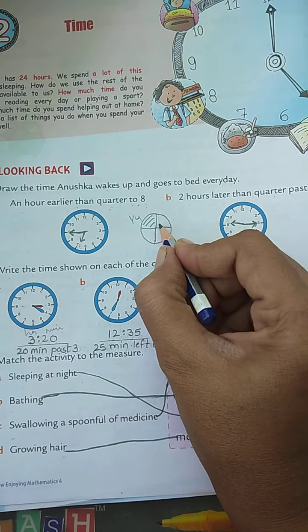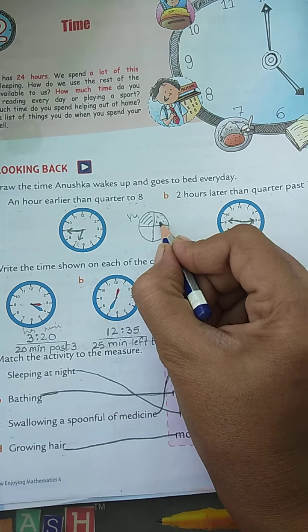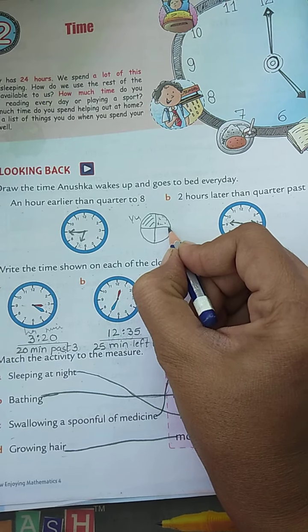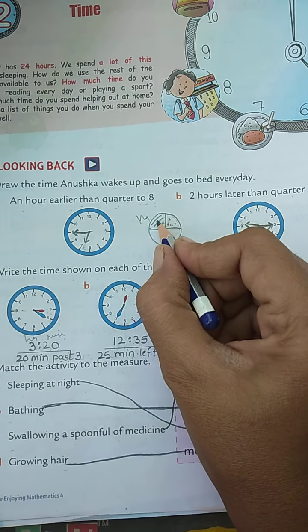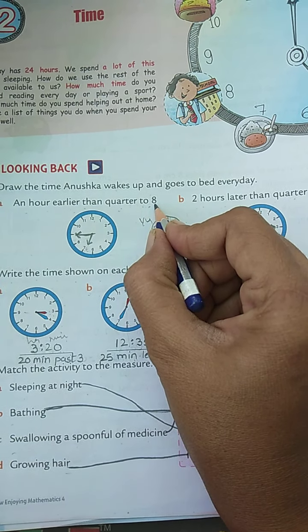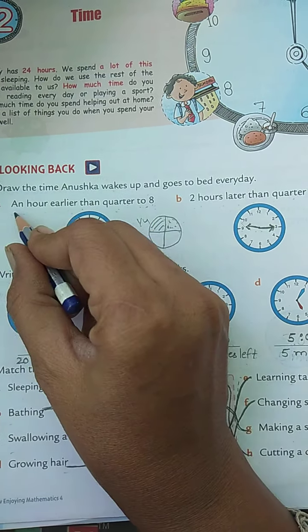So quarter to eight means this much is remaining to eight o'clock. But here, an hour earlier means one hour earlier. So eight minus one equals seven.